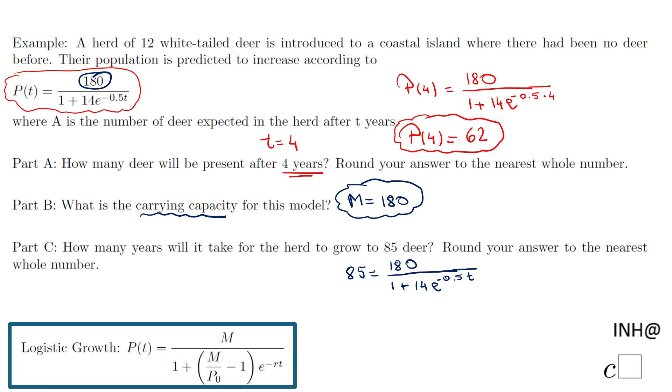Probably the fastest way, I will kind of do a cross multiplication. In fact, I will switch things here and I will have 1 plus 14e to the negative 0.5t equals 180 over 85, and then I will subtract 1.